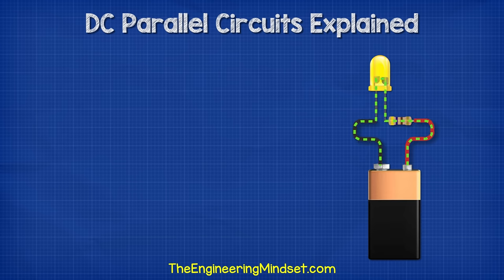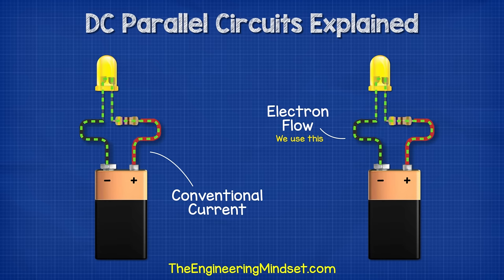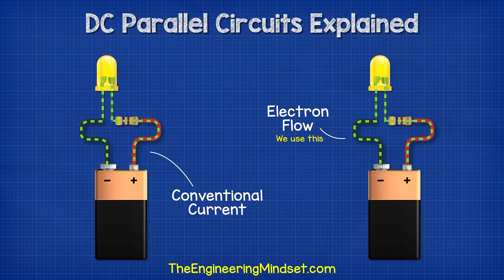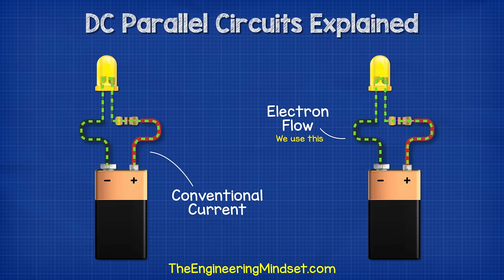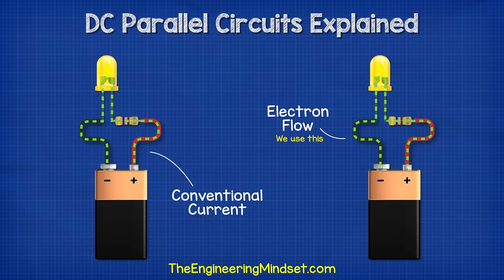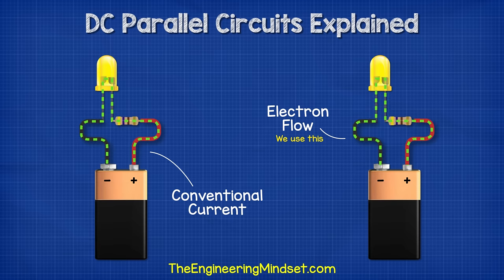In these animations, we use electron flow, which is from negative to positive. But you might be used to seeing conventional flow, which is from positive to negative. Electron flow is what's actually occurring. Conventional flow was the original theory and it's still taught because it's probably easier to understand. Just be aware of the two and which one we're using.